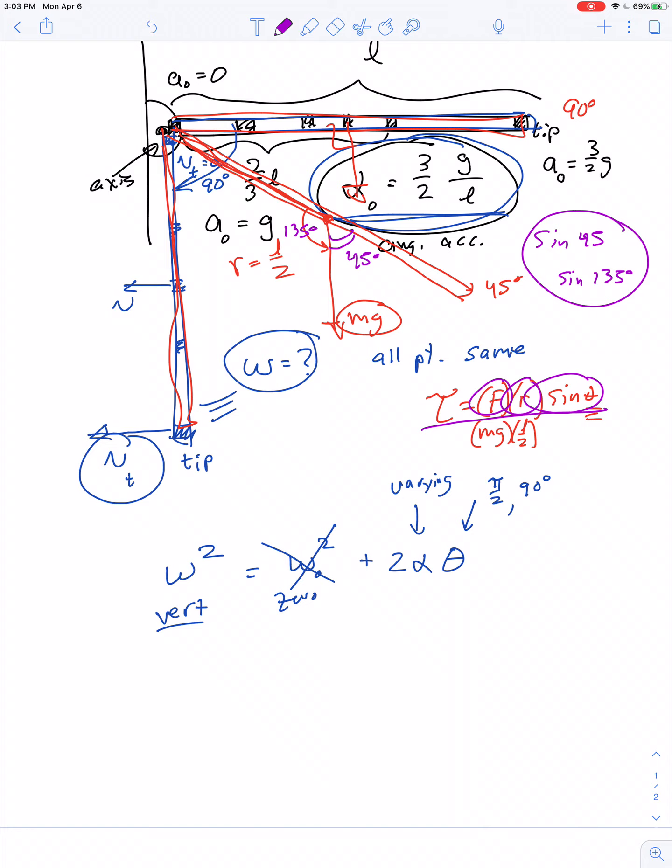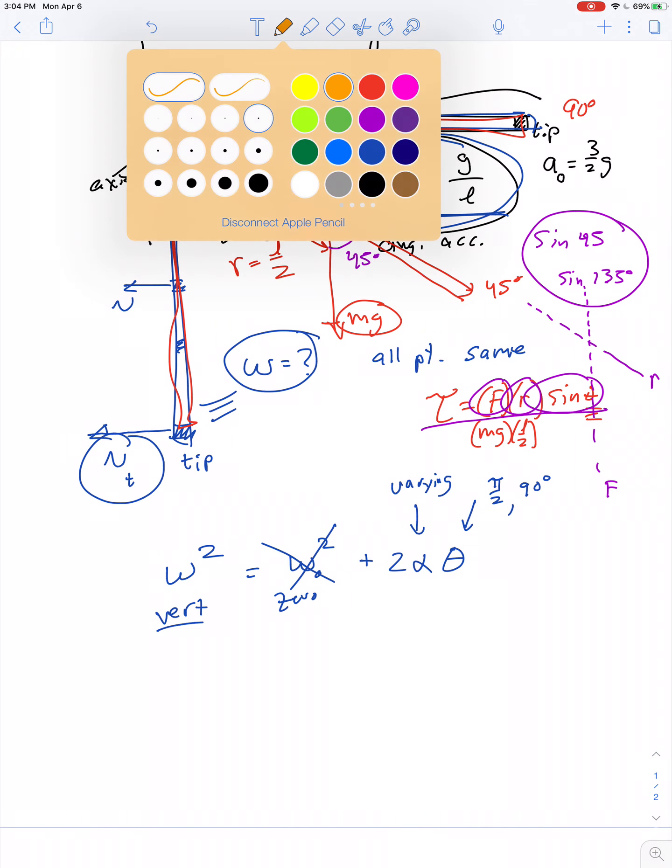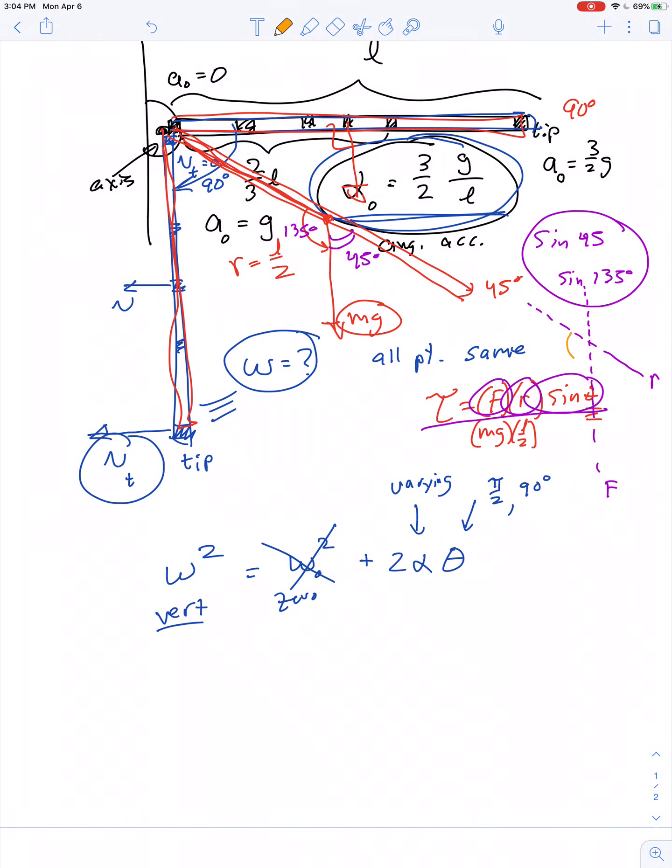So when it comes to calculating torque using the formula force times lever arm times sine of the angle, you can define the theta in this equation as the obtuse angle, the one greater than 90, or you can define the theta as the acute angle, the one less than 90, and either way you'll get the same result.